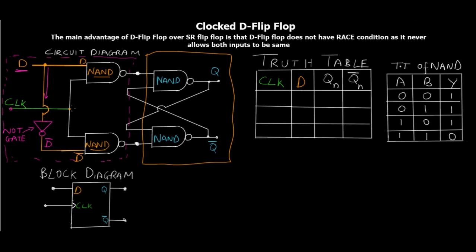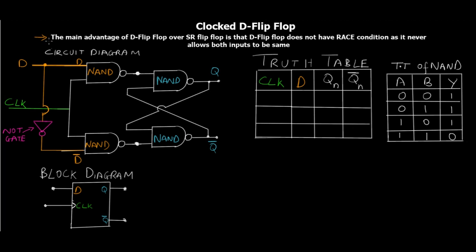The key difference in the clocked D flip-flop is that there is only one input: D goes directly to the upper NAND gate and the inverted D goes to the lower NAND gate. The main advantage of the D flip-flop over the SR flip-flop is that it does not have a race condition, because it never allows both inputs to be the same. If the upper NAND gate gets zero, the lower NAND gate always gets one, and vice versa.